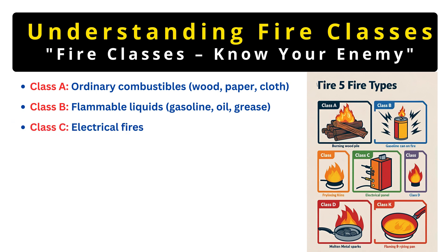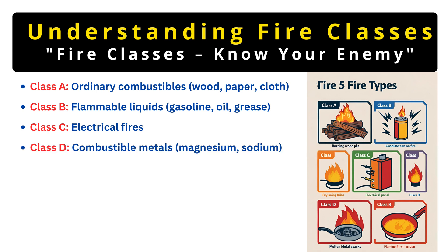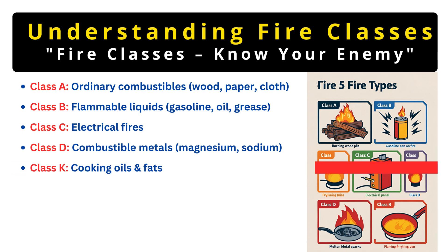Class C fires involve electrical equipment — think wiring, appliances, or fuse boxes. Water is a big no here because it conducts electricity. Class D fires are rare but intense; they involve combustible metals like magnesium or sodium, often found in industrial settings. Finally, Class K fires are specific to kitchens where cooking oils and fats can ignite. Knowing these classes is key because each extinguisher is designed for specific fire types — using the wrong one can be disastrous.